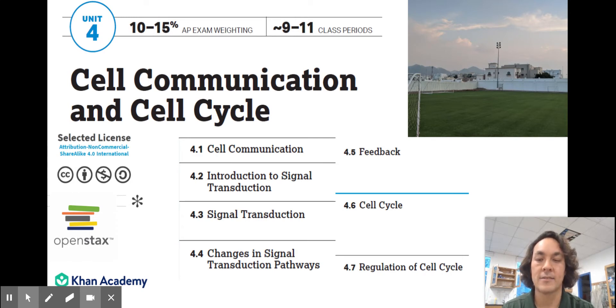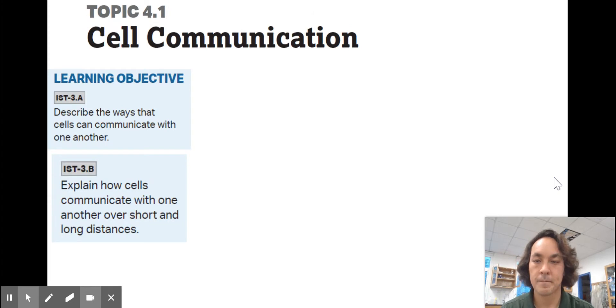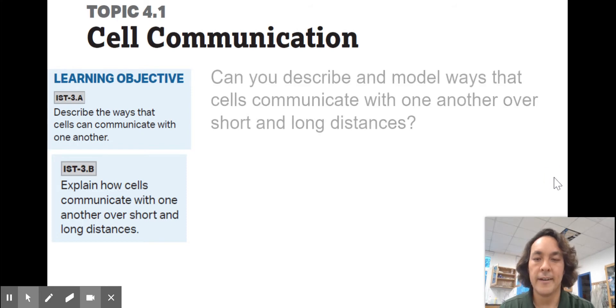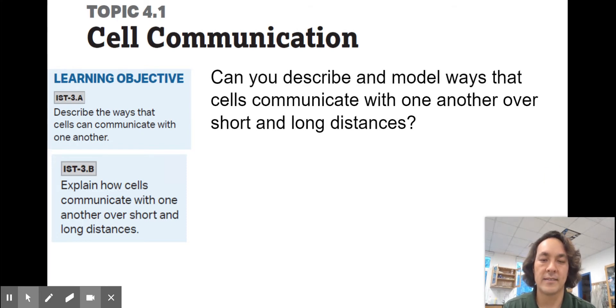Remember that you need to practice all the content in all the units paired up with the biological skills, the scientific skills, such as developing hypotheses, testing them with statistics, constructing explanations. Here we go for topic 4.1, cellular communication. You see the learning objectives over there on the left. Here's my question for you. Can you describe the model ways that cells communicate with one another over short and long distances? I encourage you to pause the video and to actually make that model.